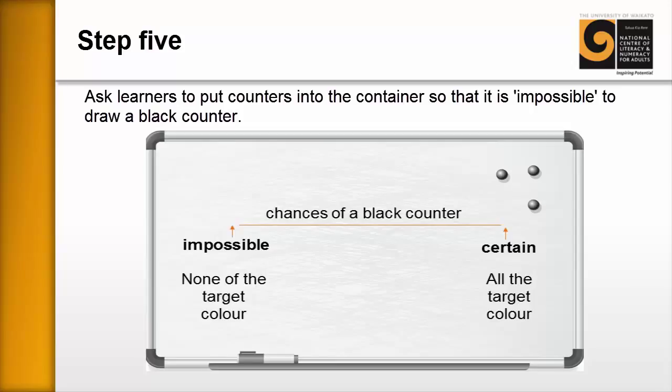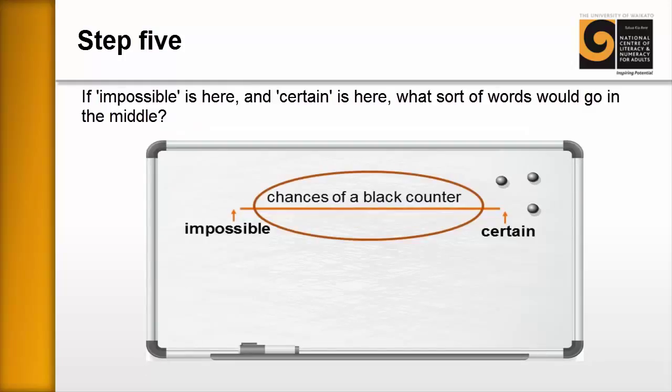Impossible, none of the target color are in there. So it is completely impossible and certain all of the target color. We want to move into this middle area. The chances of selecting a black counter, you know, what are they? If they're not impossible and certain, how do we distinguish between them? And what sort of words might go in the middle?